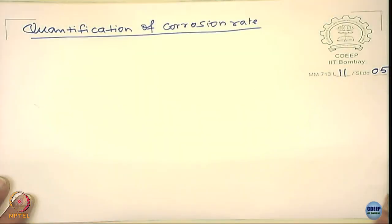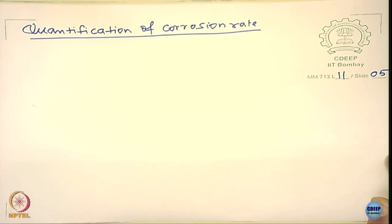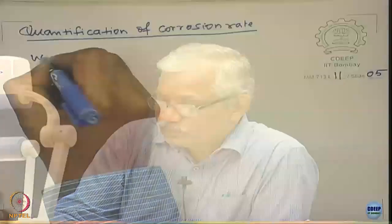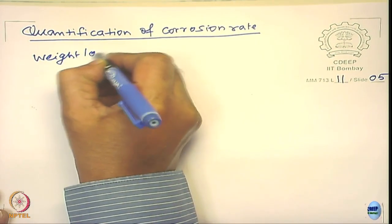Now let us get into quantification of the corrosion rate — specifically for uniform corrosion. You cannot say there is only one way of quantifying corrosion rate for all forms of corrosion. For uniform corrosion, one straightforward method is weight loss measurement. What is the procedure? You take a specimen of known dimensions and immerse it in a corrosive environment for a known period, then take it out and measure the change in weight.